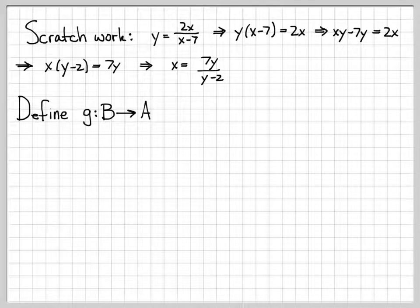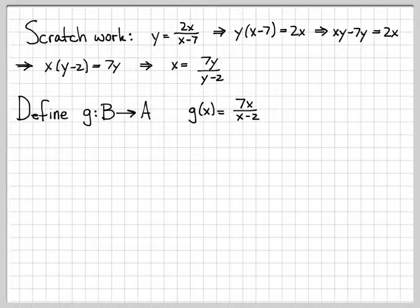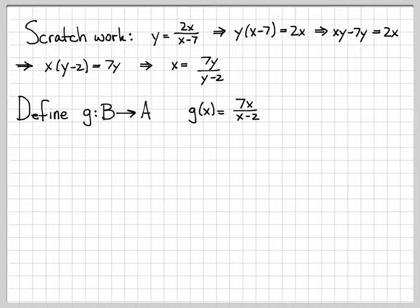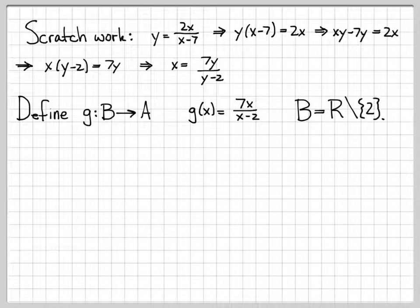Let's show this actually works by defining g(x) = 7x/(x - 2), because that's exactly what we computed. We also need the domain and range. Obviously B is going to be the set of all reals except the point 2, because if we plug in x = 2, things would blow up. Everything else is fine for g(x), so our choice for B is the reals except the point 2.